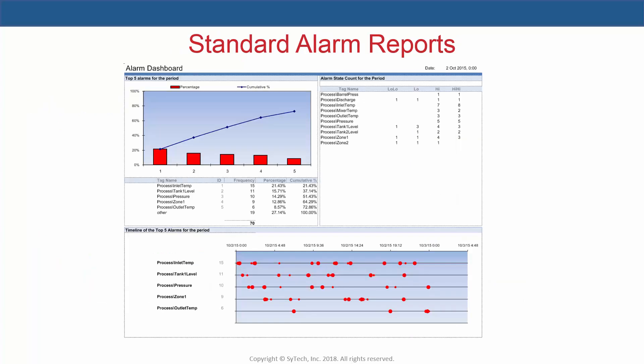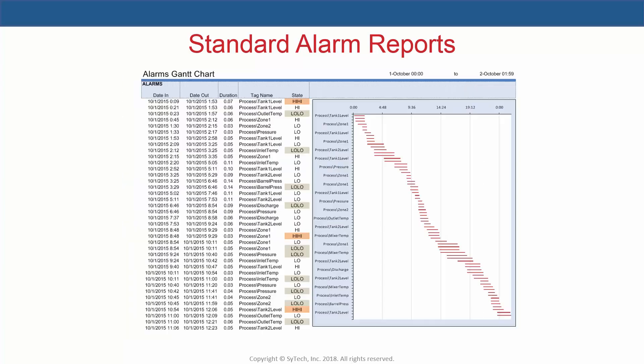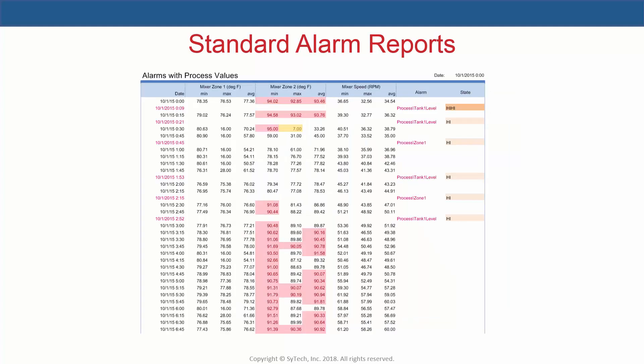Examples of standard alarm reports include an alarm dashboard which collects alarm history over the day and displays results as a Pareto chart, useful for visualizing the most frequently occurring alarms. Another report visualizes alarm history as a Gantt chart, displaying the timeline and duration of alarms, useful for identifying sequences and patterns. A third example combines alarms and process history into a single inline log to correlate process variables with alarms.